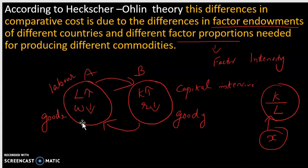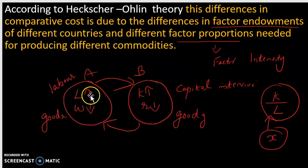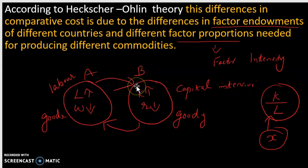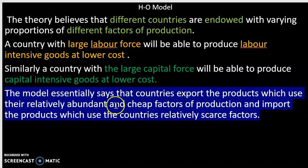Good Y will be produced in less amount in country A. The two countries will produce X and Y respectively. The labor-intensive country can produce the labor-intensive good at a cheaper rate, and the capital-intensive country can produce the capital-intensive good at a cheaper rate. The model essentially says that countries export the products which use their relatively abundant and cheap factors of production and import the products which use the country's relatively scarce factors.